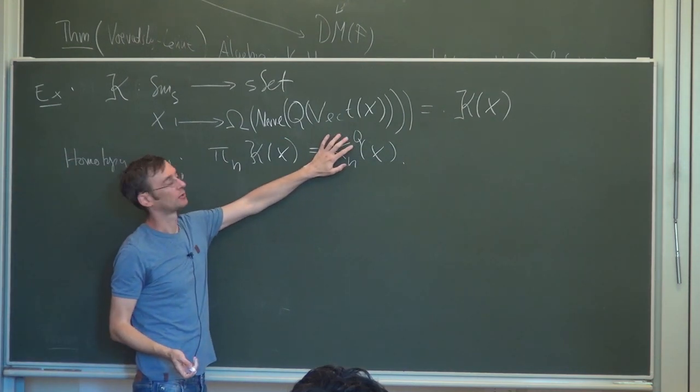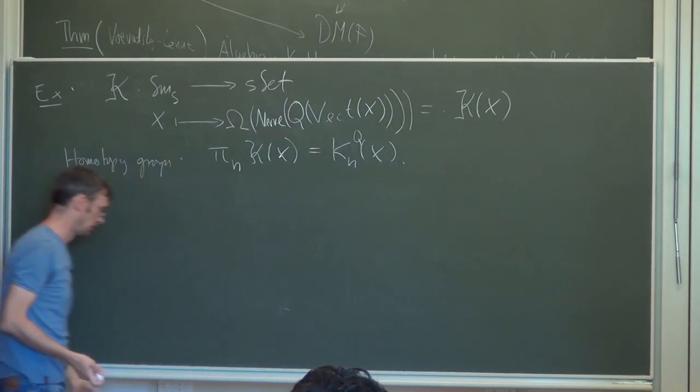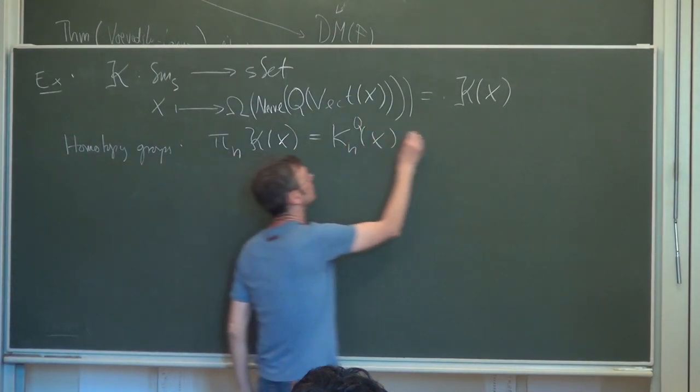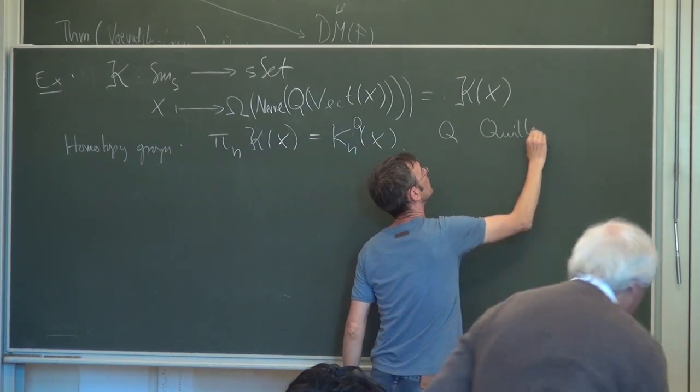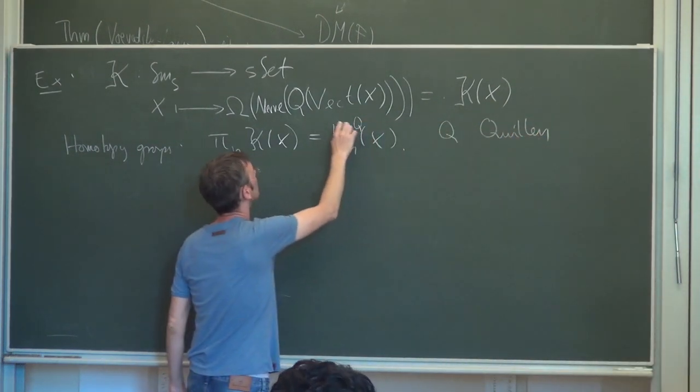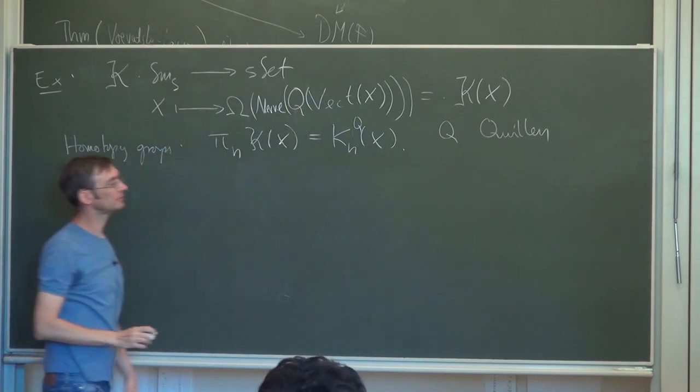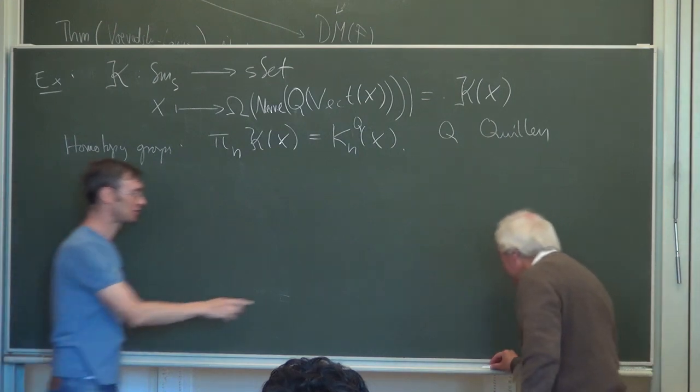And this is K of X. So essentially by definition, the homotopy groups of this simplicial set are the algebraic K-groups of X. So notation for homotopy groups is π_n. So these are Quillen's K-groups. Later there were other types of K-groups, like Milnor K-groups, Milnor-Witt K-groups. So this is what this here stands for: Q stands for Quillen—here and here for the Q-construction, which is due to Quillen.